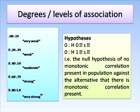Regarding hypothesis: the null hypothesis states there is no monotonic correlation present in the population, while the alternative (research) hypothesis states there is a monotonic relationship between two variables — for example, that revision time has a direct or inverse relationship with academic performance. The null hypothesis would state there is no relationship between revision time and students' academic performance.